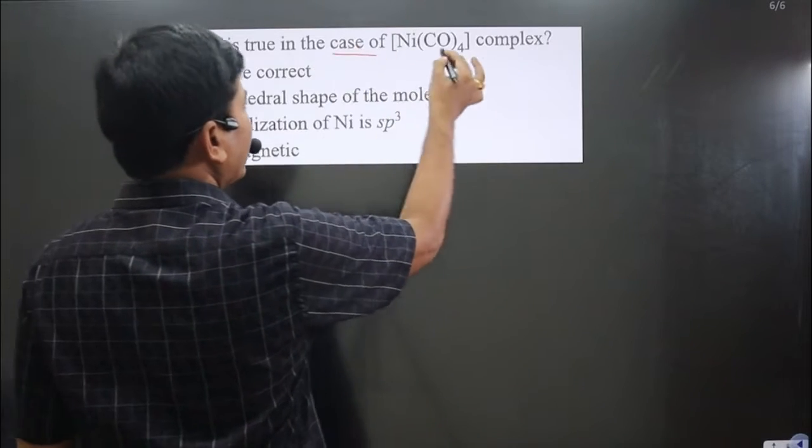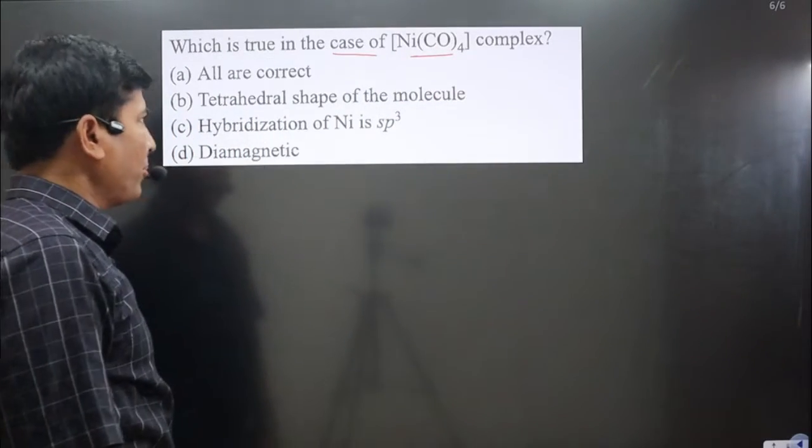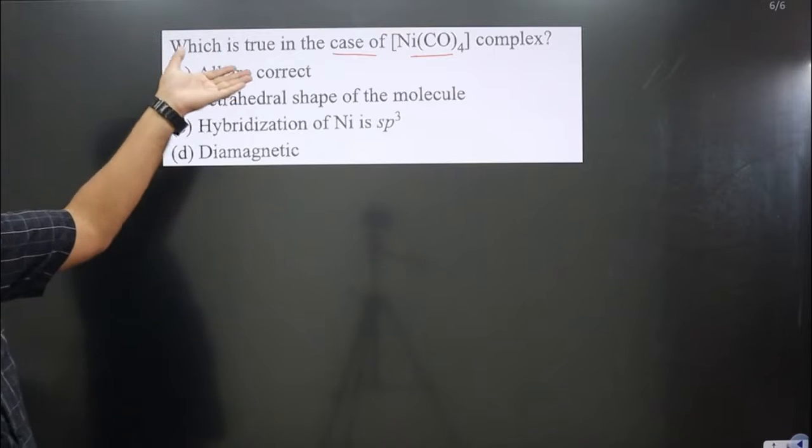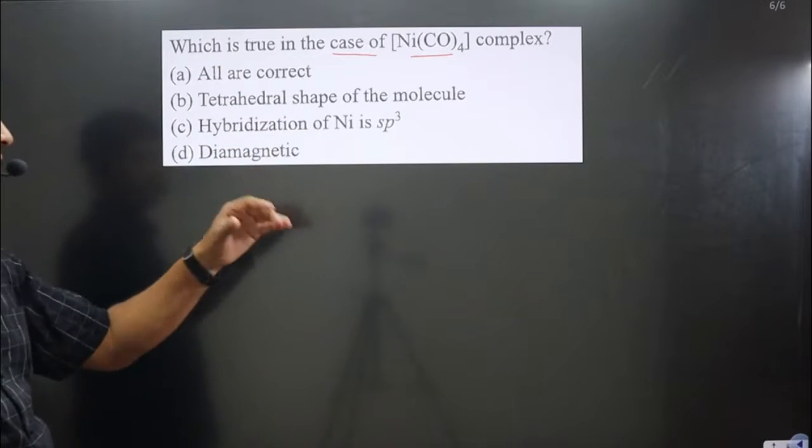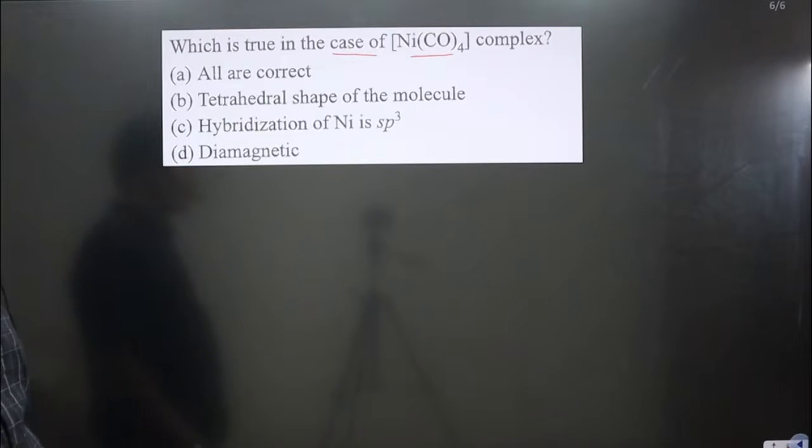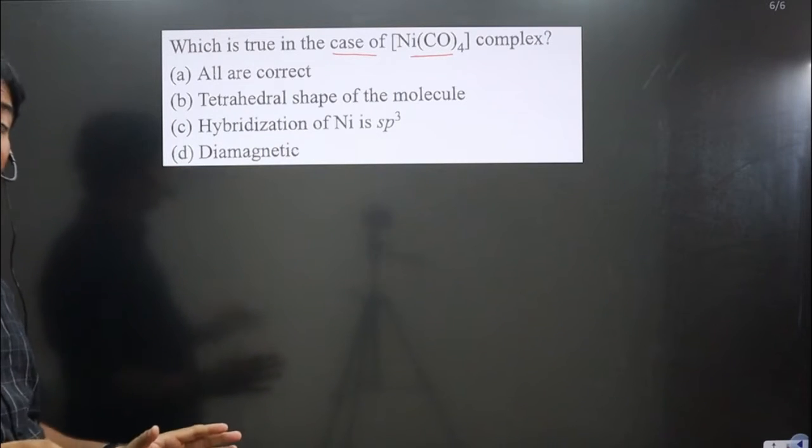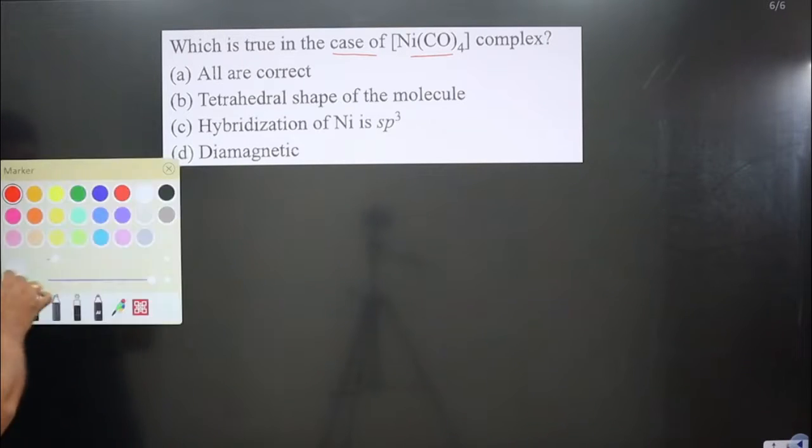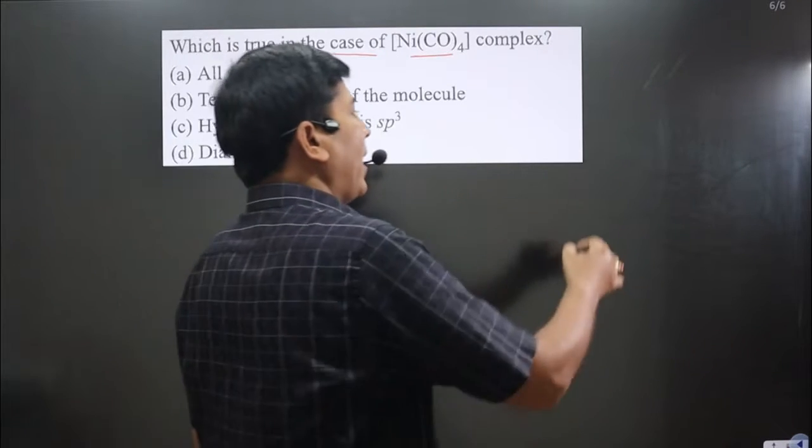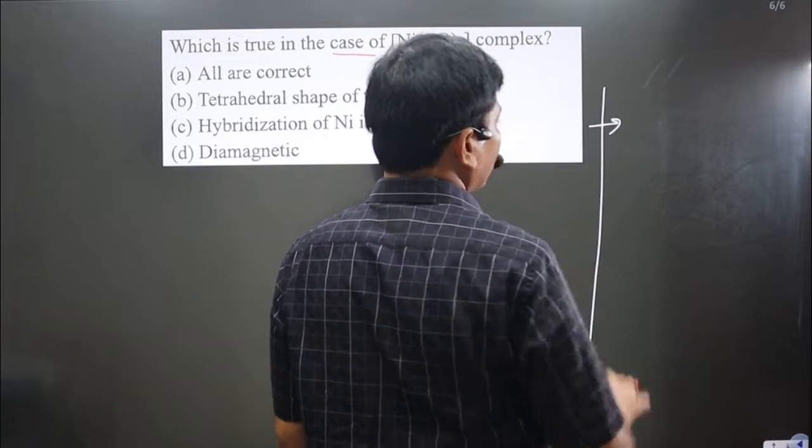The question asks which is true in the case of [Ni(CO)₄] complex. All options are correct: tetrahedral shape, sp³ hybridization, and diamagnetic. Whenever the question is related to hybridization, geometry, or magnetic properties, always use Valence Bond Theory.